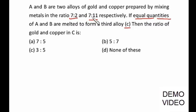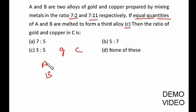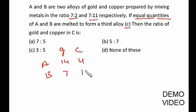Alloy A is 9 kilograms and alloy B is 11 plus 7, i.e. 18 kilograms. So if I have to melt equal quantities I should make it also 18 kilograms — if I double alloy A I will be getting 18 kilograms. So in alloy A, gold will be double of 7 that is 14 and copper is 4; in alloy B gold is 7 and copper is 11.